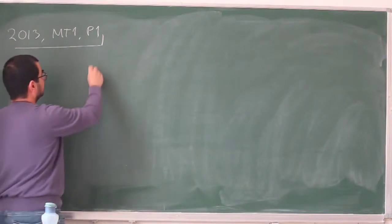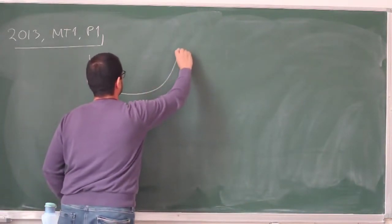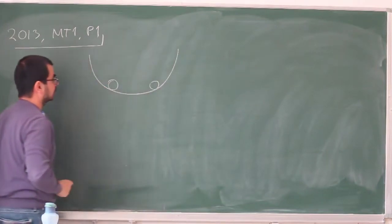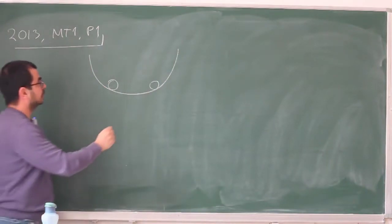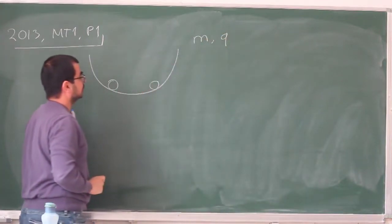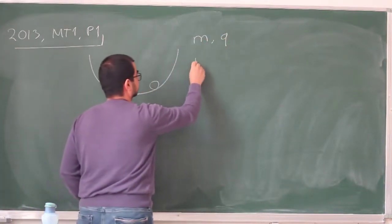In this problem we have a bowl, a semi-spherical bowl, and in this there are two little spheres of charge. They both have mass m and they both have charge q, and we have gravity, we're not neglecting gravity here.